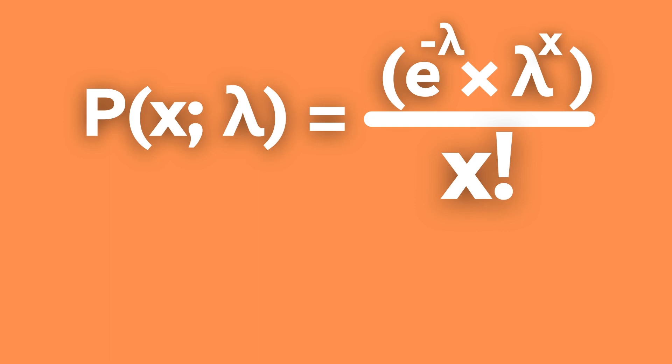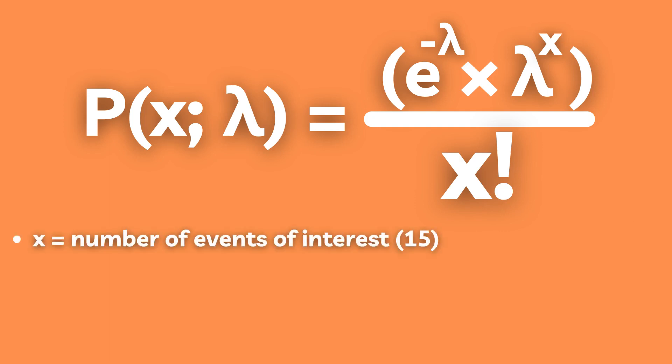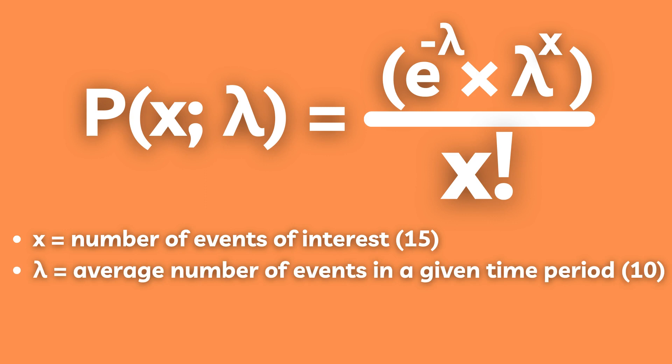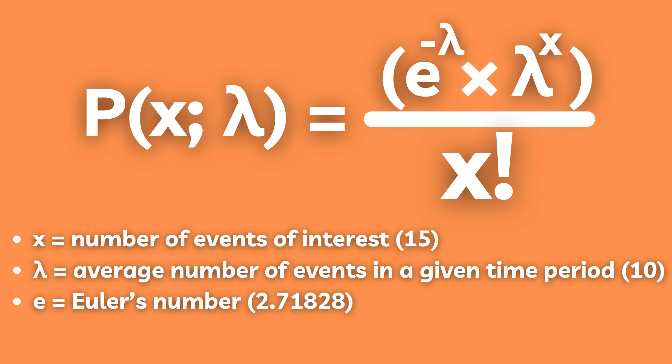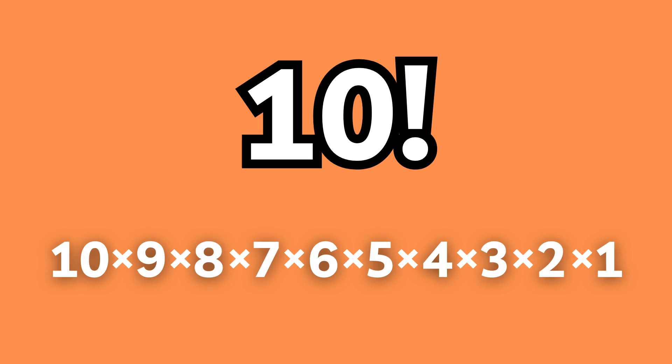Where x is the number of events we're interested in, in this case 15; lambda is the average number of events in a given time period, in this case 10; e is Euler's number, which is a constant equal to 2.71828; and the exclamation mark is a factorial, which is the number times itself minus 1, times itself minus 2, times itself minus 3, and so on until you reach 1.